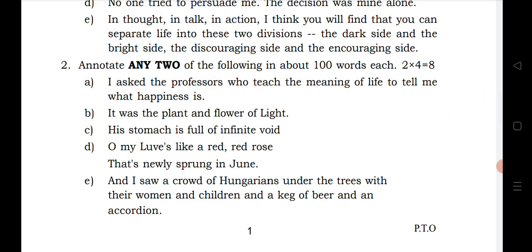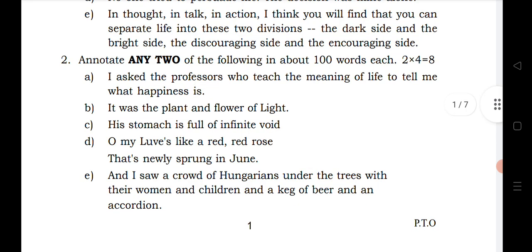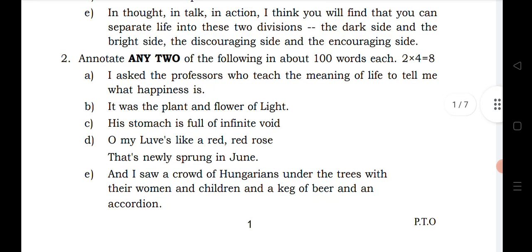In Question 2, the first question A is from 'Happiness,' B is from 'Noble Nature,' C is from 'The Beggar,' D is from 'Red Red Rose,' and E is again from 'Happiness.' So 'Happiness' is a very important chapter here — the board is asking two questions from it. Practice 'Happiness' thoroughly and keep 'Red Red Rose' as a backup chapter.